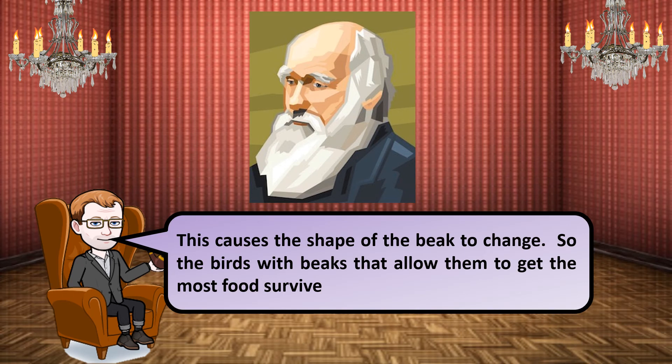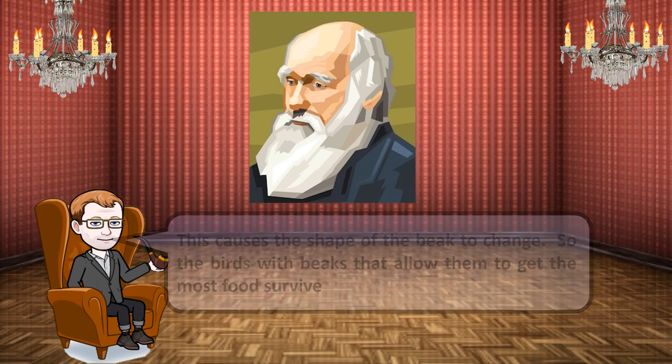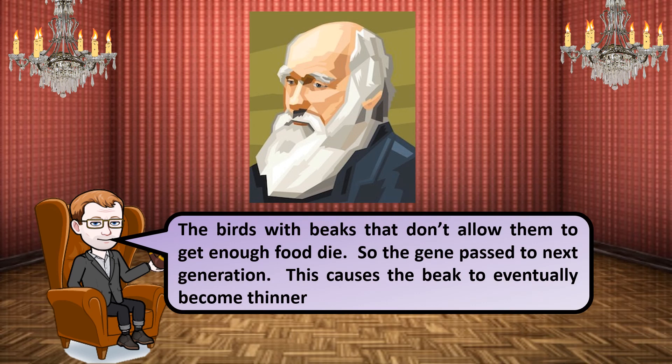This caused the shape of the beaks to change. The birds with beaks that allow them to get the most food survived, while birds with beaks that don't allow them to get enough food ended up dying. The birds on different islands were evolving differently. The genes passed to the next generation came from the birds with the best-adapted beaks, causing the beak shape to eventually become thinner.